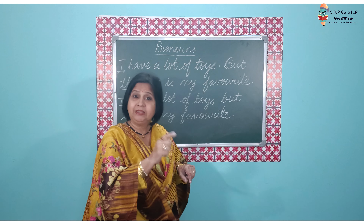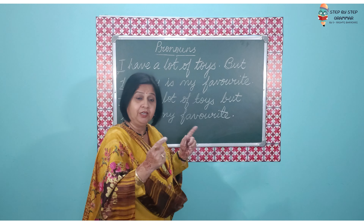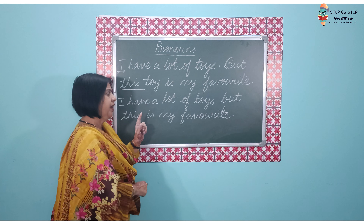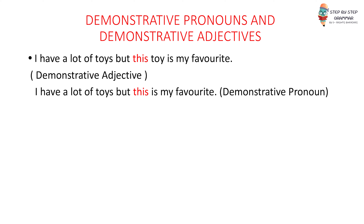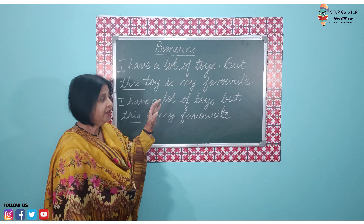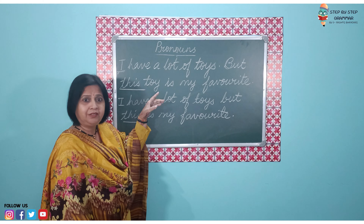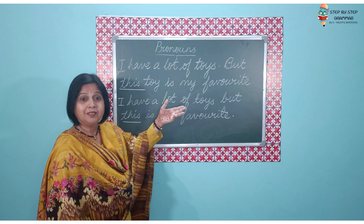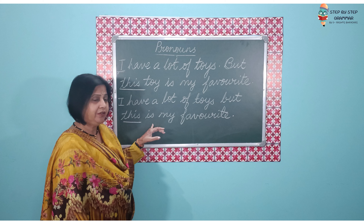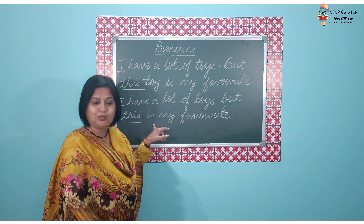Now the next sentence: I have a lot of toys, but this is my favorite. The word 'this' that I have used over here — I have used it in place of 'this toy'. I have not used any noun after 'this'. So that's simply a demonstrative pronoun. Little difference, but very easy to find out. If there is a noun after the word this, that, these, or those — then that's a demonstrative adjective. If there is no noun, then it is a demonstrative pronoun.